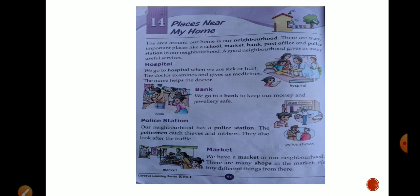Apni hamsaigi mein hum bahut sari buildings dekhne ko milti hain. Bahut sare log jo reh rahe hote hain woh dekhne ko milte hain. Aur bhi kuch aisi jagahein hoti hain jo ham dekhne ko milti hain — there are many important places like a school, market, bank, post office, and police station in our neighborhood. We can see bahut sare makaan dekhne ko milte hain jin mein log rehte hain, plus we can see a school, a neighborhood hospital.